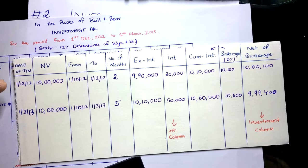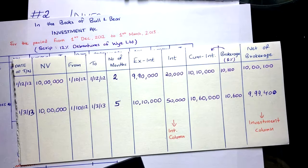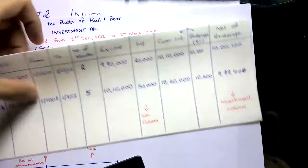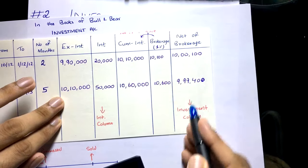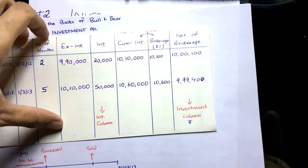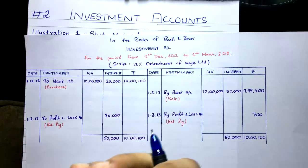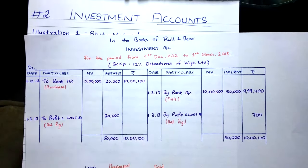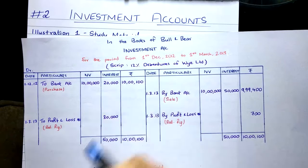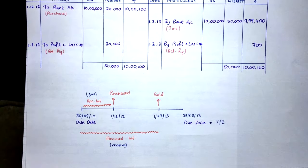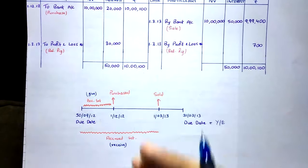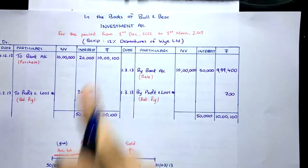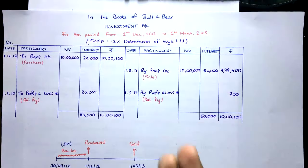In the investment account, the purchase entry on the debit side shows: Nominal Value ₹10 lakh, Interest ₹20,000, and Amount (cost of investment) ₹10,00,100 — To Bank Account. The nominal value is 10,000 debentures × ₹100. The interest of ₹20,000 is the accrued interest paid to the seller.